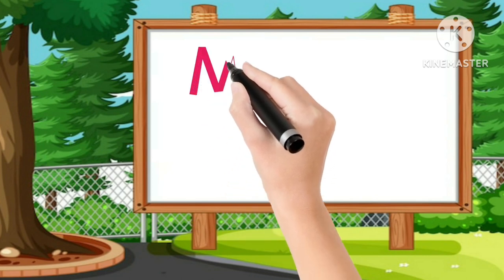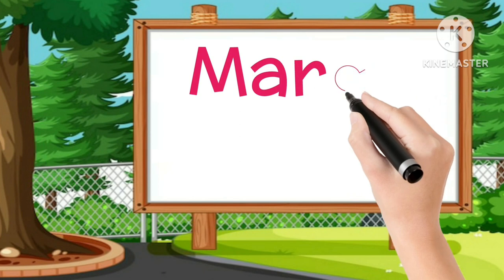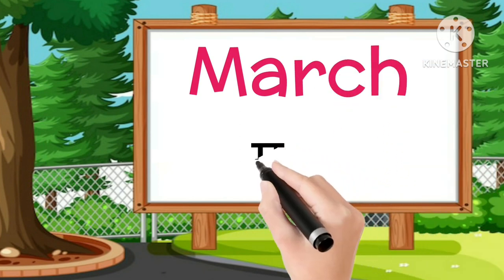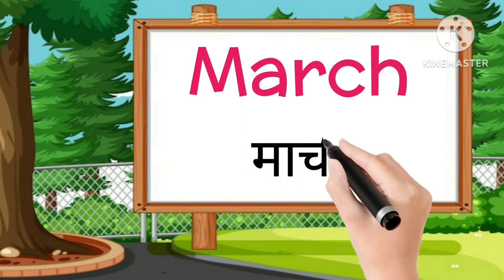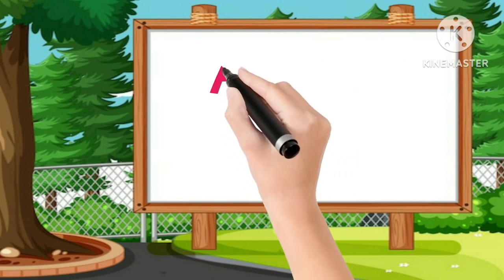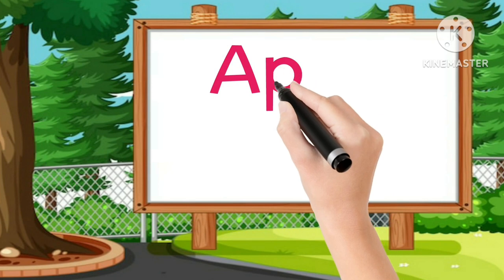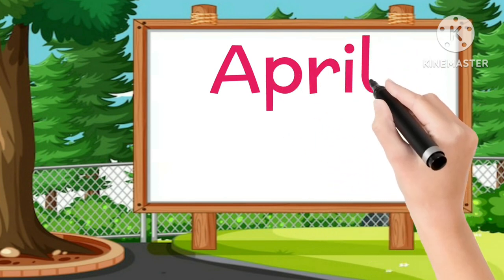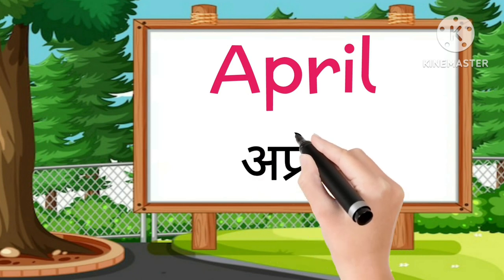M-A-R-C-H, March. March is the third month of the year. A-P-R-I-L, April. April is the fourth month of the year.